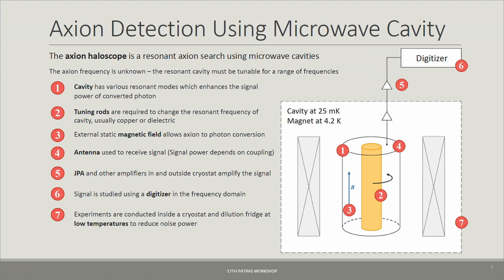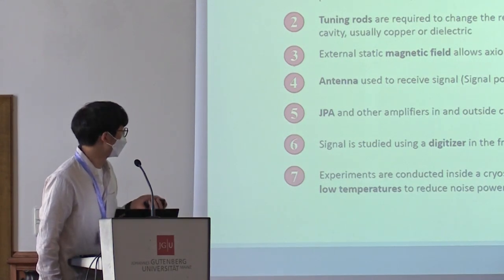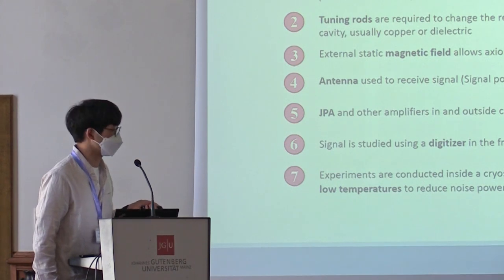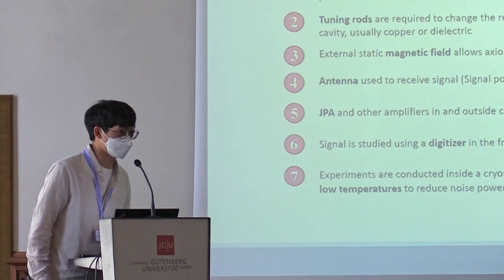An external static magnetic field allows for axion-to-photon conversion. The signal is picked up via an antenna, amplified through various amplifiers, and read through a digitizer or spectrum analyzer, allowing us to look in the frequency domain for a signal. To achieve low noise, experiments are conducted inside a cryostat and dilution fridge at millikelvin temperatures, reducing noise power as much as possible.